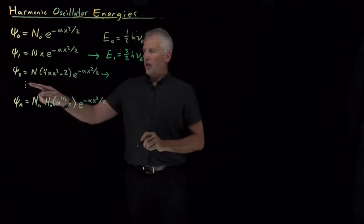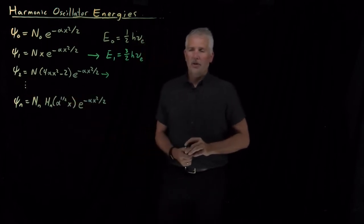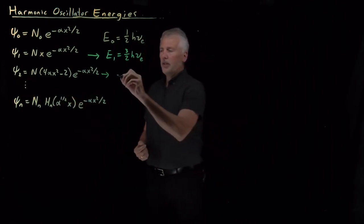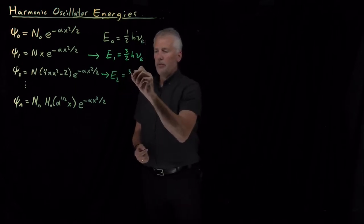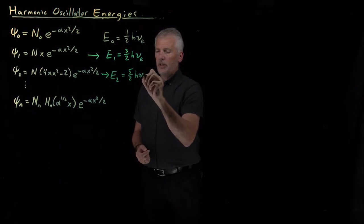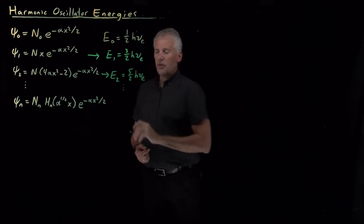Similarly, if I plug the psi_2 wave function into the harmonic oscillator Schrodinger equation, I'll get the energy of the n equals 2 wave function, and that will turn out to be five-halves times h times nu. This pattern repeats.